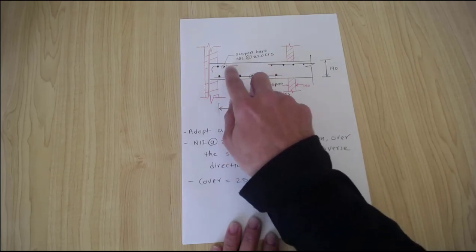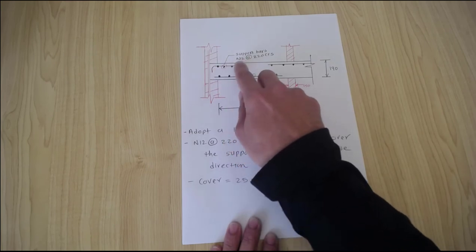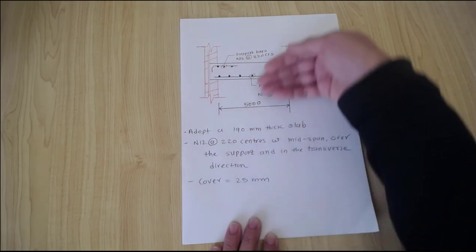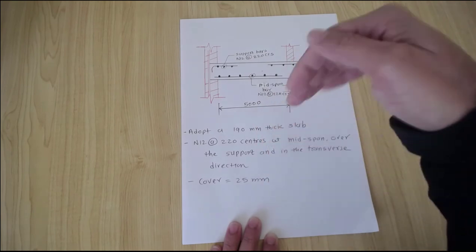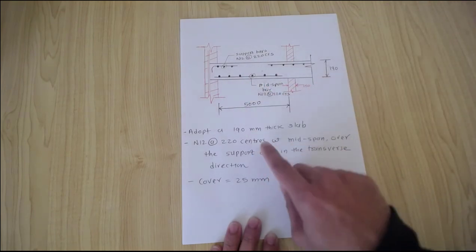At the support here and at the support here, we are also providing primary reinforcement N12 at 200 centers. If you take the beam out of the page and draw the plan view, you can see the secondary reinforcement also.